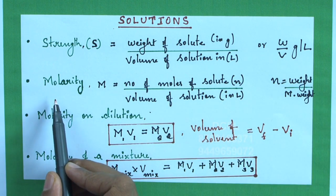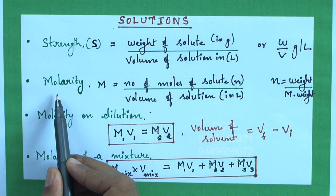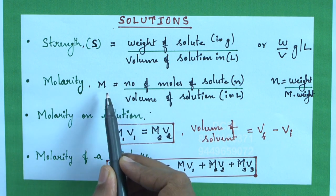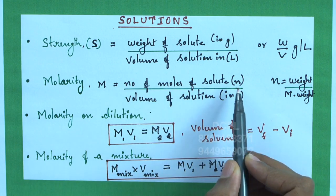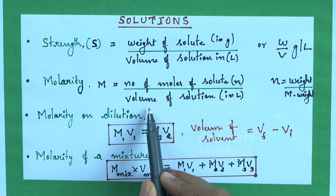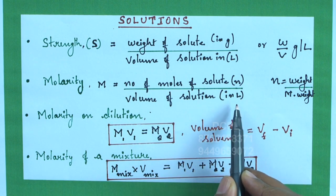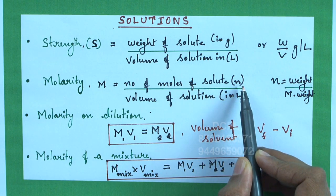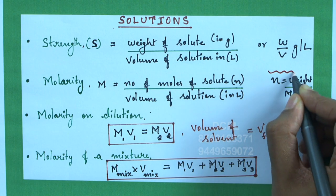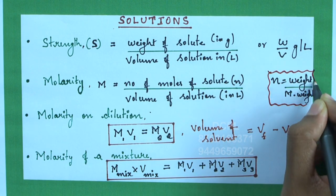And moving on to the next expression which is very famous, that is molarity, and it is represented as capital M and it is given as the number of moles of solute divided by volume of solution in liters. The moles of solute is represented as small n and it is nothing but weight divided by molecular weight.